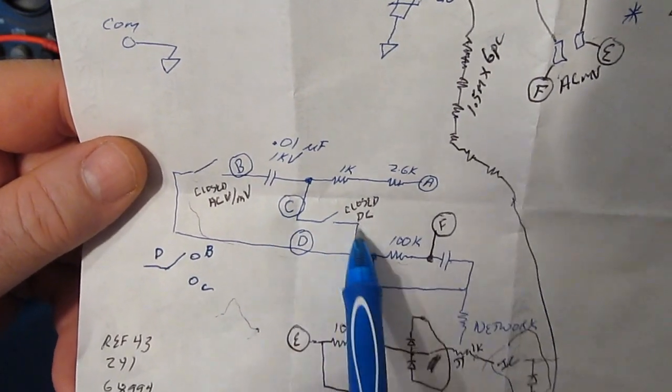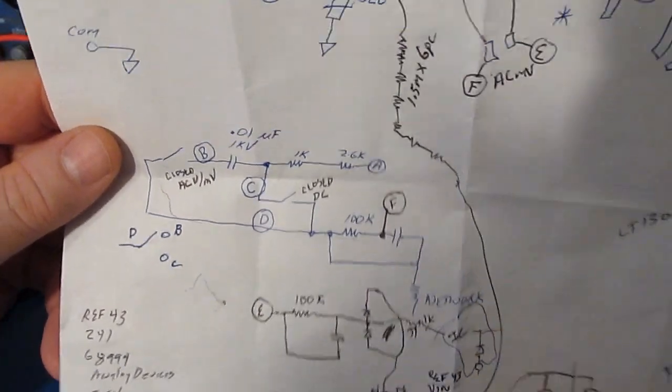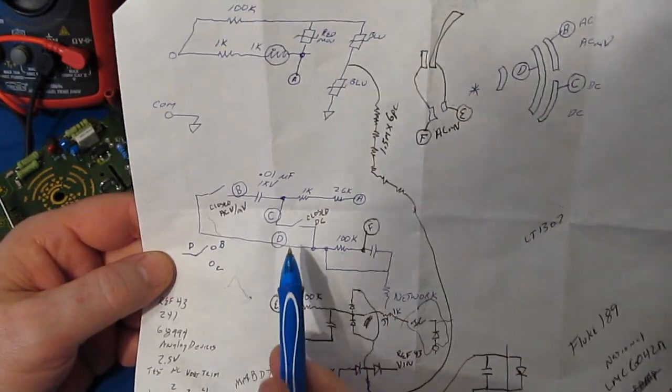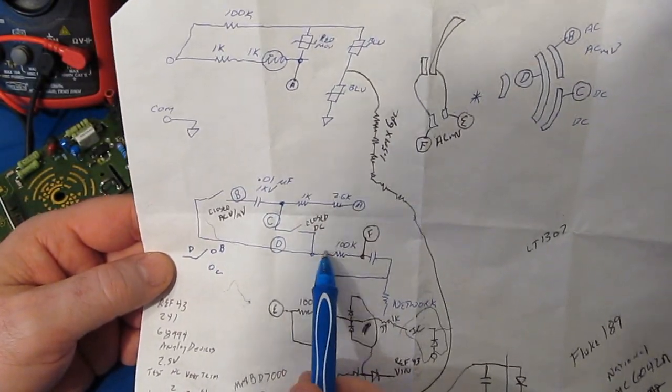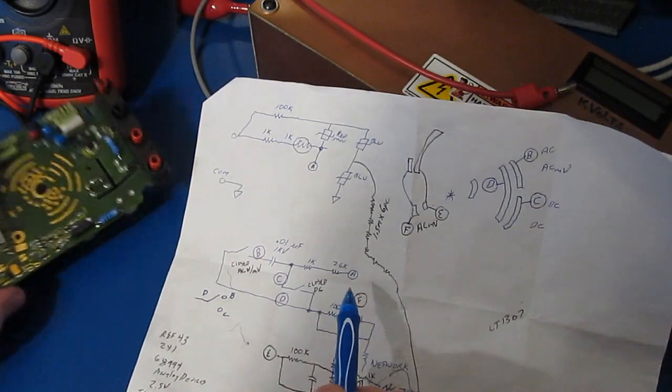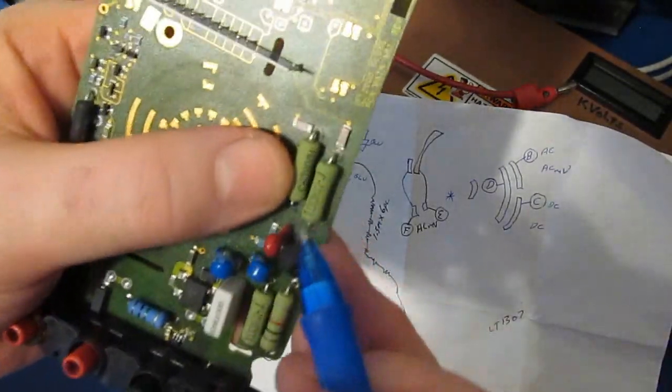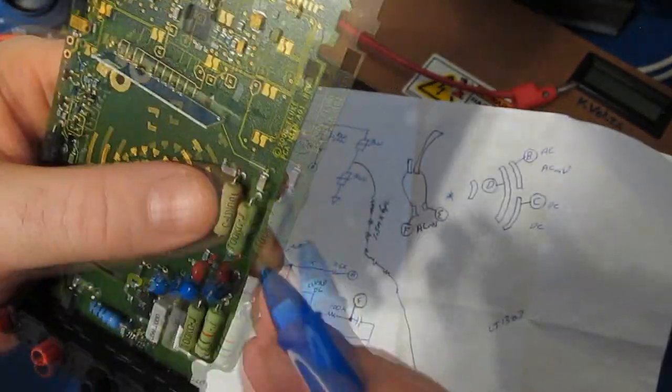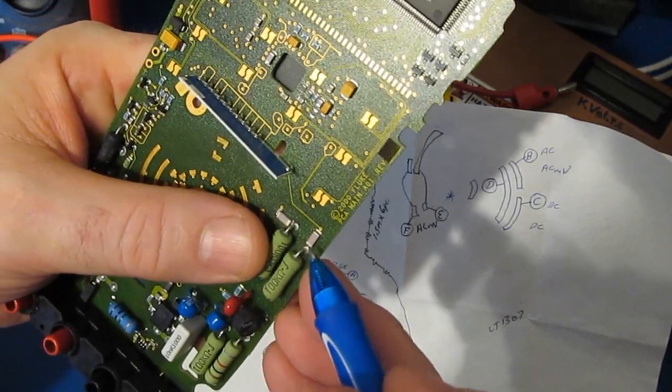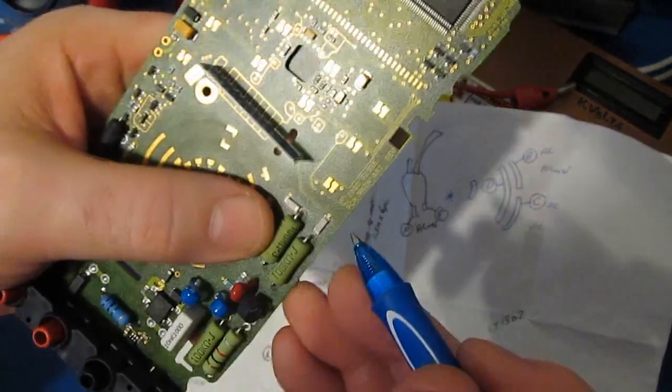So fairly straightforward. The D contact then goes to another 100k ohm resistor and that is this guy here. While it looks like it's in series with this capacitor, it's not. It's actually in parallel.